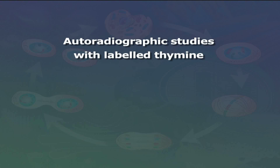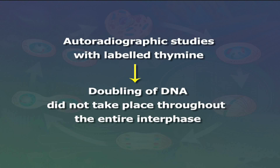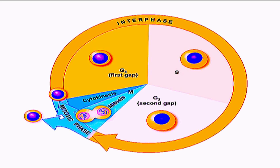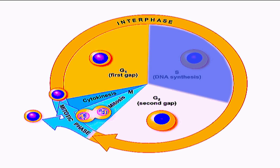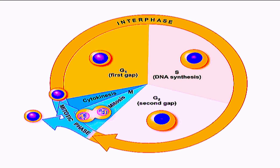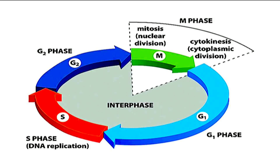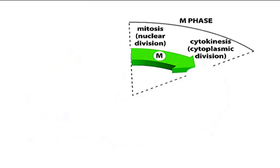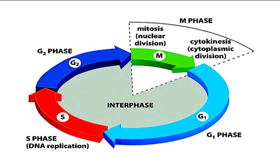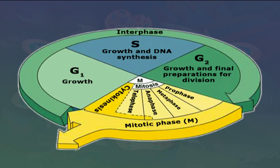Autoradiographic studies with labeled thymine demonstrated that DNA replication does not take place throughout the entire interphase — it occurs only in a restricted portion called the S phase, or synthetic period. This period is preceded and followed by two gap periods, G1 and G2, in which there is no DNA synthesis. Thus interphase can be subdivided into three successive sub-phases: G1, S, and G2. It normally comprises 90 percent or more of the total cell cycle. G1 is the period between the end of mitosis and the start of DNA synthesis; S is the period of DNA synthesis; and G2 is the interval between the end of DNA synthesis and the start of mitosis.